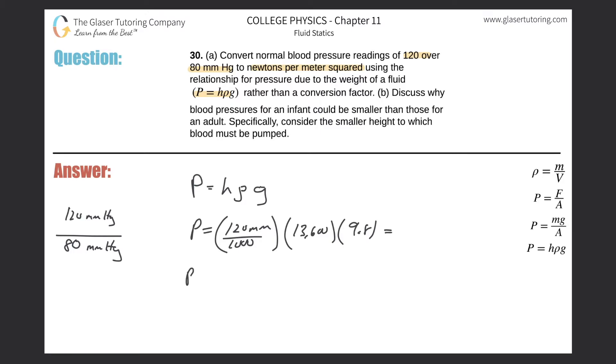We'll get our answer. And then why don't we just do the same thing for the diastolic? We got 80 over 1000, it's the same thing, times 13,600, and then multiplied by 9.8. What do we get?